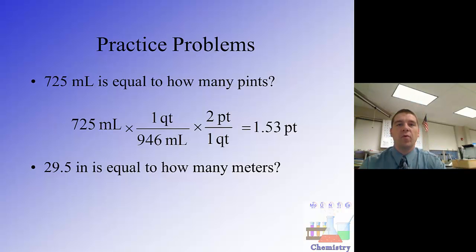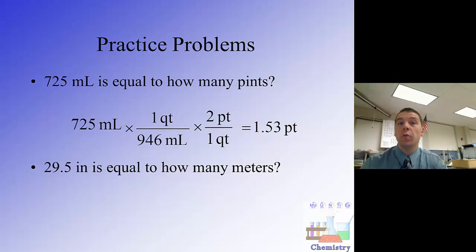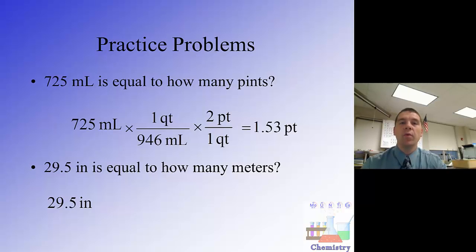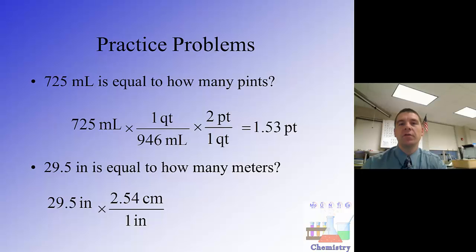In the second example, we convert 29.5 inches to meters. Inches is a length measurement, so we're starting on the English side and moving to the metric side. Our metric-English conversion for length is 2.54 centimeters equivalent to 1 inch. We're already at the bridge in inches, so we cross by writing 29.5 inches and setting up the conversion factor with inches on the bottom and 2.54 centimeters on top. Now on the metric side, we convert centimeters to meters.